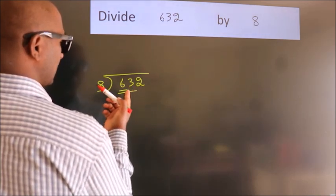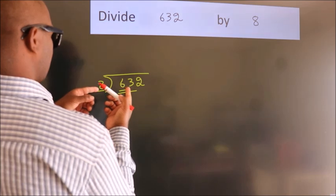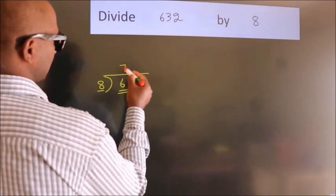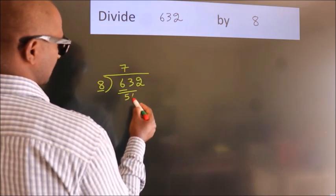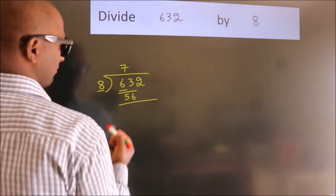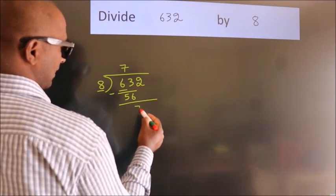A number close to 63 in the 8 table is 8 times 7 equals 56. Now we should subtract. We get 7.